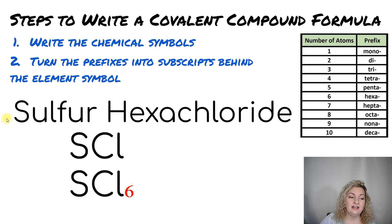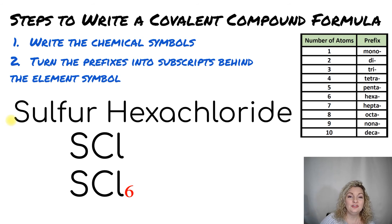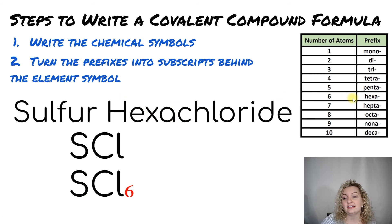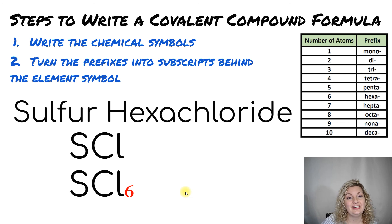Step two: turn the prefixes into subscripts. Sulfur does not have a prefix, and remember our exception — we do not write 'mono' in front of the first element. So there's an understood one for sulfur and I don't have to write it. The next one is 'hexa,' and hexa is 6, so I write that 6 as a subscript on the right-hand side of the chlorine symbol. And you are done — you just wrote covalent compound formulas.